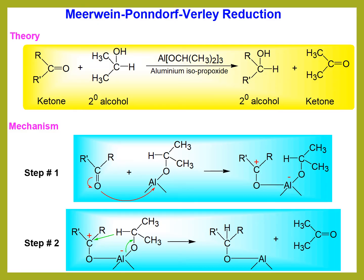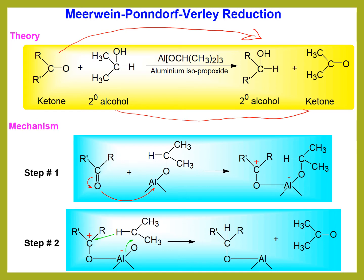Ponndorf applied the reaction to ketones and upgraded the catalyst to aluminum isopropoxide in isopropanol. Here we can see an example of MPV reduction reaction — a ketone is reacting with a secondary alcohol in the presence of the catalyst aluminum isopropoxide. After completion of the reaction, the starting ketone will be reduced to its corresponding secondary alcohol and the secondary alcohol will be oxidized to its corresponding ketone. That is why the reaction is known as a reduction reaction.